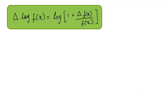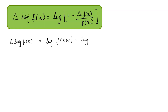Moving on to our next question, we have to prove that delta log f(x) is equal to log of 1 plus delta f(x) upon f(x). Starting with the left hand side, we have delta log f(x). When we apply a forward difference operator to this function the value becomes log f(x plus h) minus log f(x). And what is this value equal to? This is equal to log of f(x plus h) upon f(x).